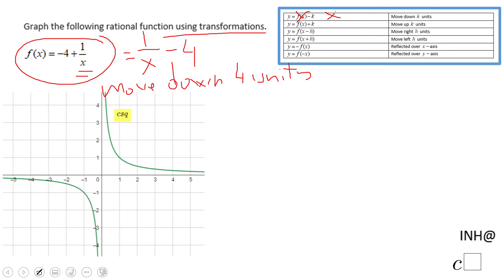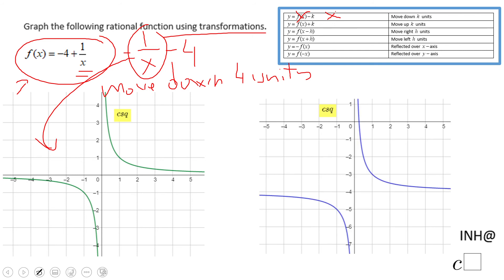And this is the graph of the parent graph of 1 over x, the reciprocal function. The graph of f of x, the function given to us, this one, will be the same like that one, just moved 4 units down. And you notice this is the graph.